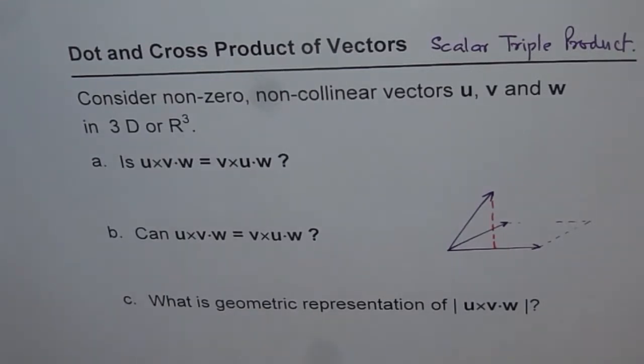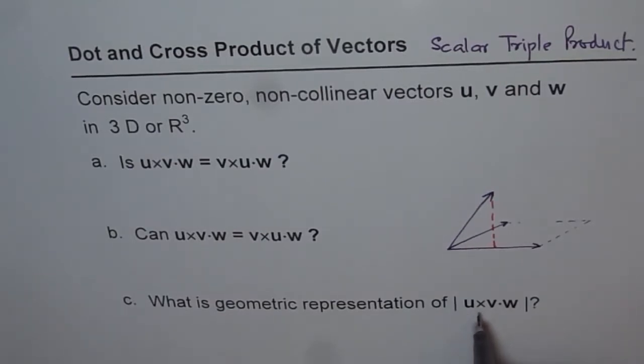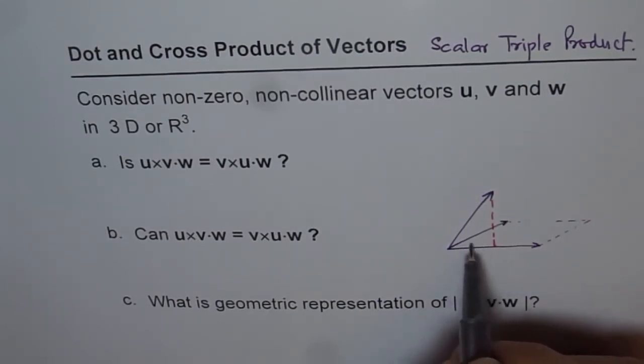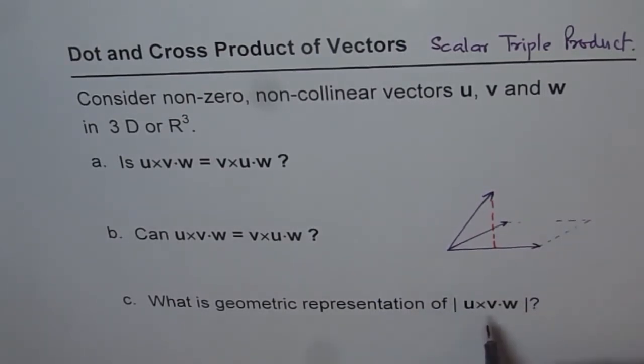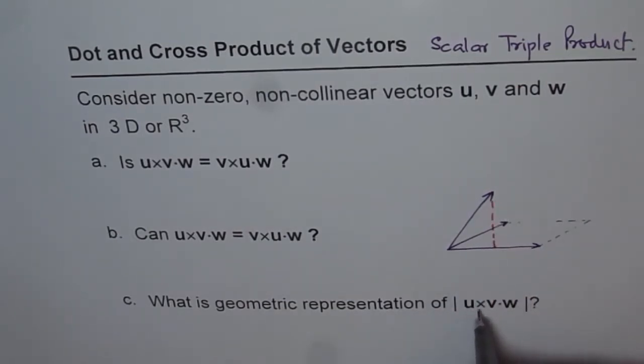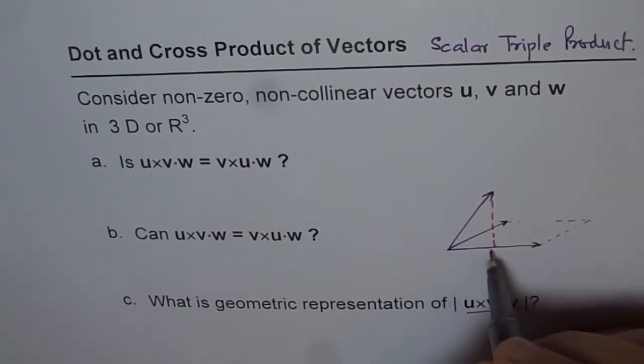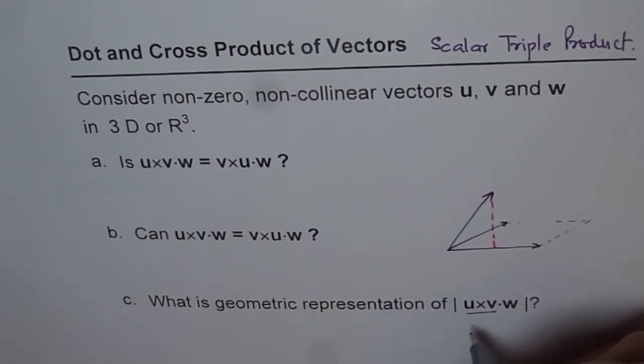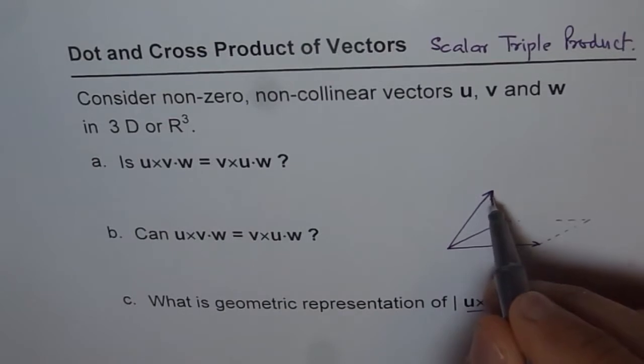Now, when we say u cross v, then we are saying area of the base. The area of the base is like I have shown you here. But vector has a component, which is the vertical component. And that vertical component is the direction in which u cross v acts. u cross v is a vector, whose magnitude is the same as the base of this parallelogram. And its direction is vertical.